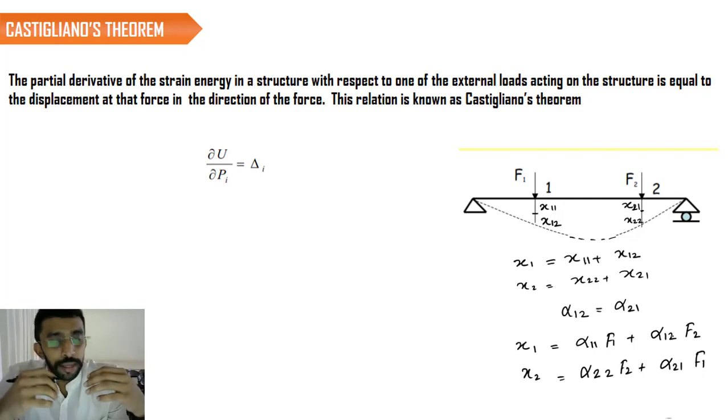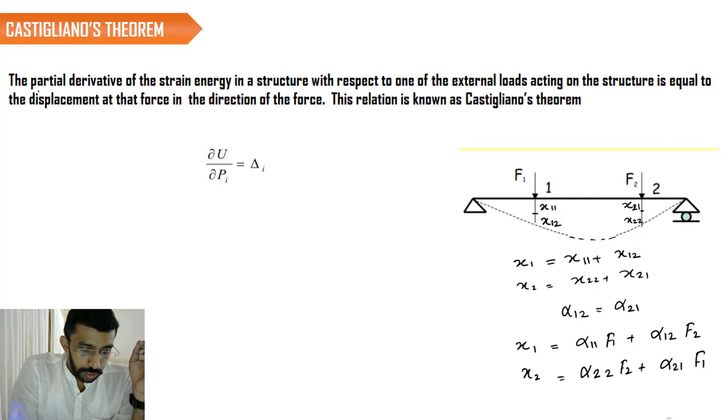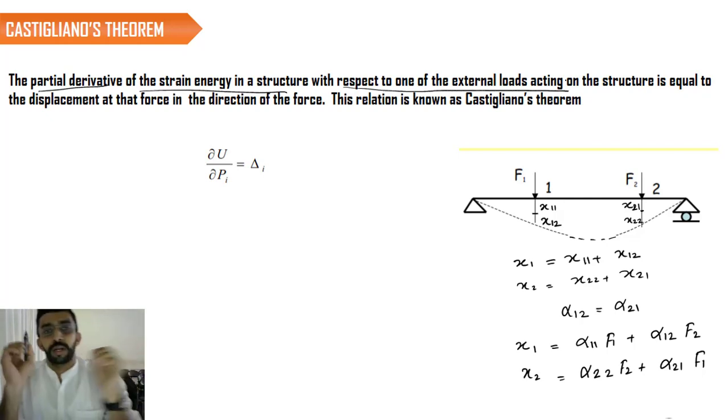What does Castigliano's theorem state? It states that if we differentiate the strain energy equation with respect to a particular load, say the load F1, then you are going to get the deflection at 1. That means, whatever might be the variable upon which we are going to differentiate, we are going to get the deflection at that particular point. The partial derivative of the strain energy in a structure with respect to one of the external loads acting on the structure is equal to the displacement at that force. That is very important.